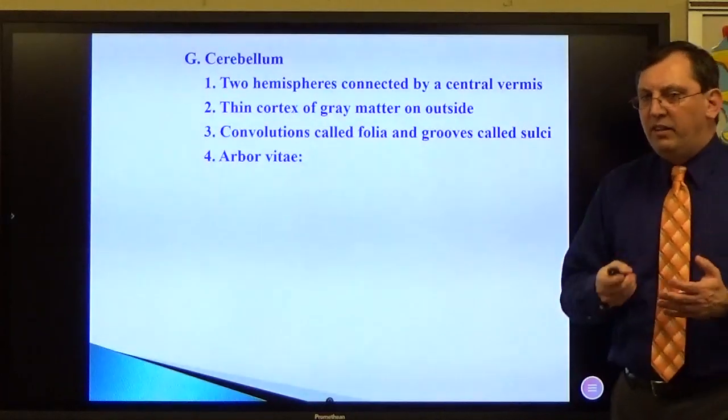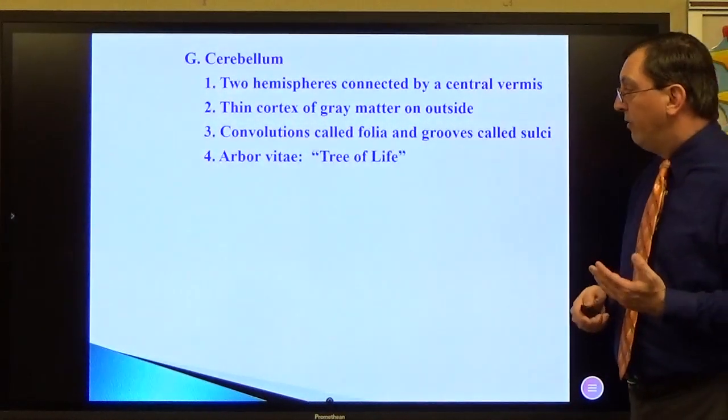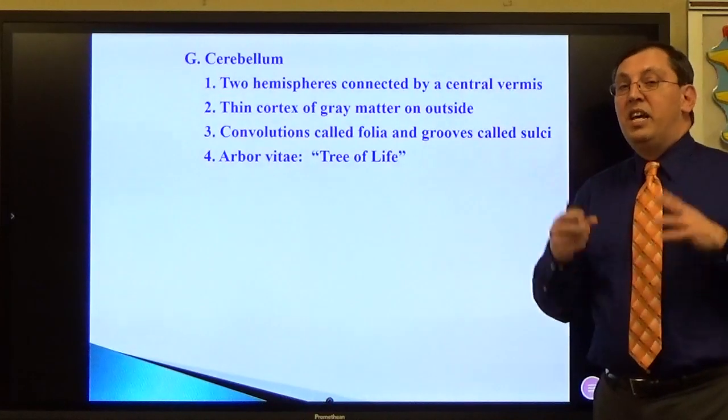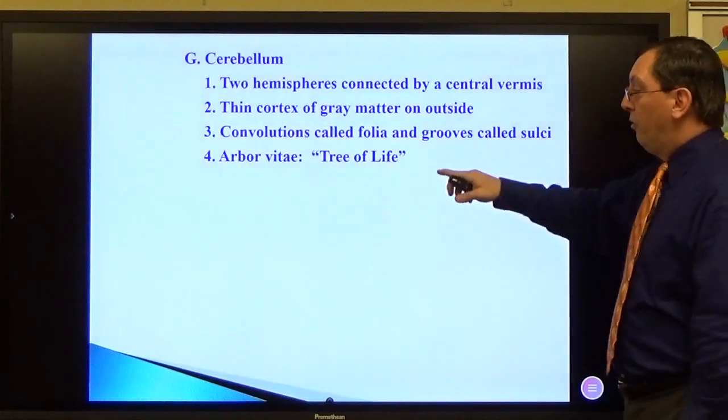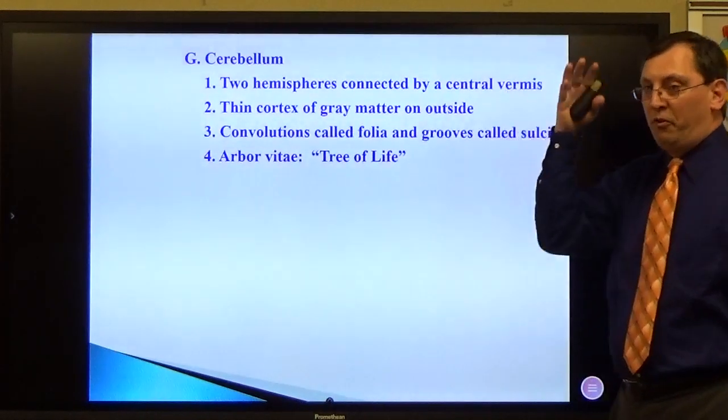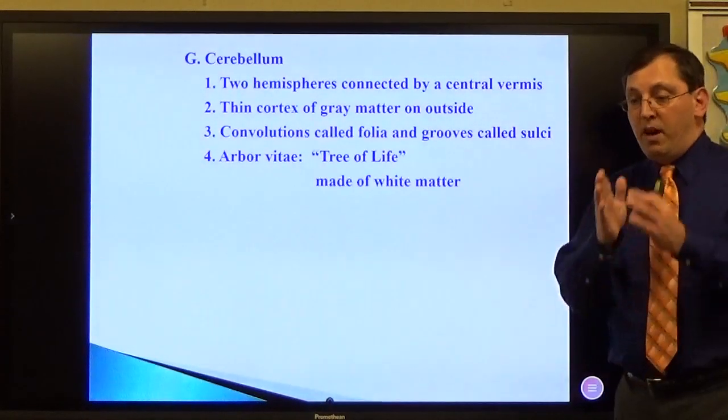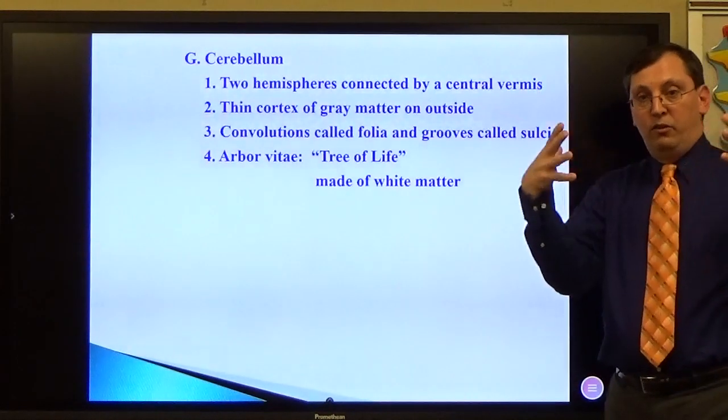But here's the reason why we call it folia, the arbor vitae. Arbor vitae translates to white tree, or tree of life. It is the tree of life. So what do trees have on the outside? Leaves. So that's why the outside of these branches have the little folds, which are called the folia. It's called tree of life because the white matter makes a branching pattern from the inside that looks like a little tree pattern.